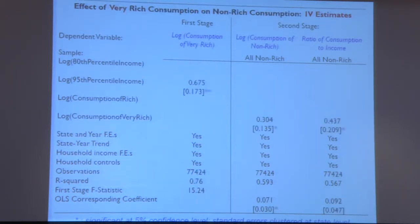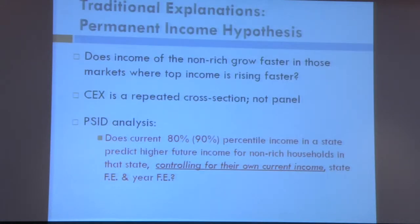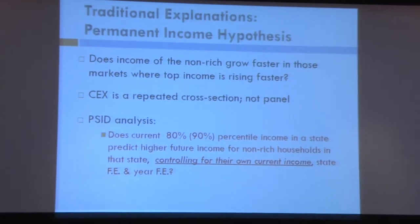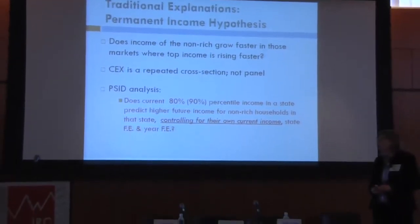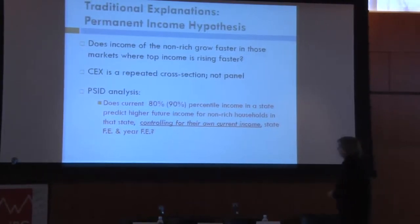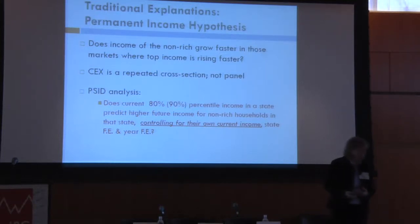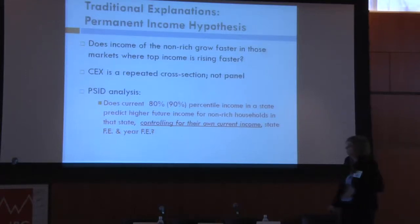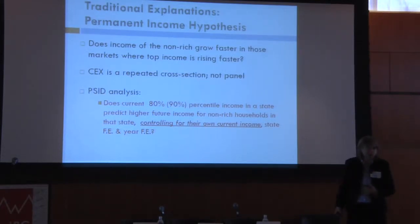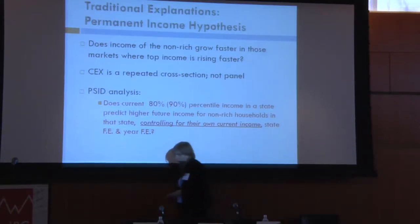We've found this interesting correlation. We have a story in mind but we're open to any explanation — this correlation could be a number of different things. We're not trying to construct tests to go after our own story; instead we want to consider all possible stories. The first obvious stories are permanent income type stories, and we'll also do a precautionary savings story. Does the income of the non-rich grow faster in markets where the rich are getting richer? To do this, we can't use the CEX because it's mostly a cross-section, so we go to the PSID.